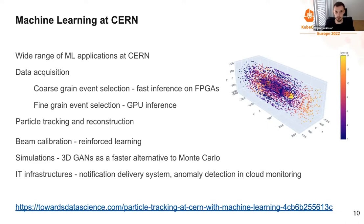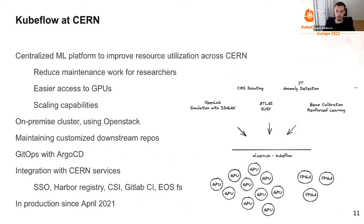One of the main challenges at CERN is machine learning infrastructure. Various groups work on machine learning but all work on local infrastructure — one to four GPUs they have to set up themselves, installing NVIDIA drivers, CUDA, and Python libraries, then sharing that across users. This is a lot of additional maintenance work for researchers, which we'd like to avoid, and this is how the idea for Kubeflow arose.